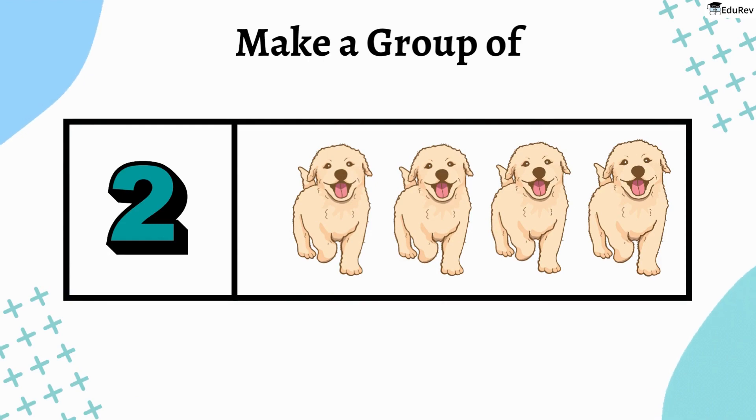We now have to make groups like this. See students, the number written here is 2 and here are 4 dogs. So, we will group 2 dogs together like this. In the same way, we will do the rest.